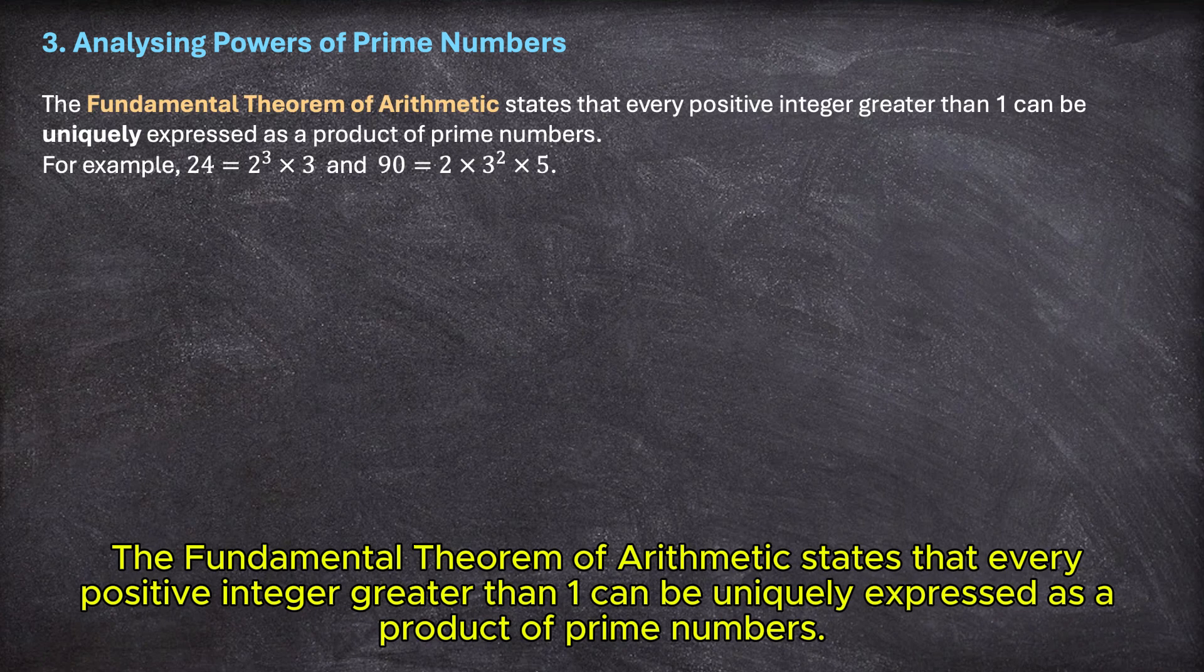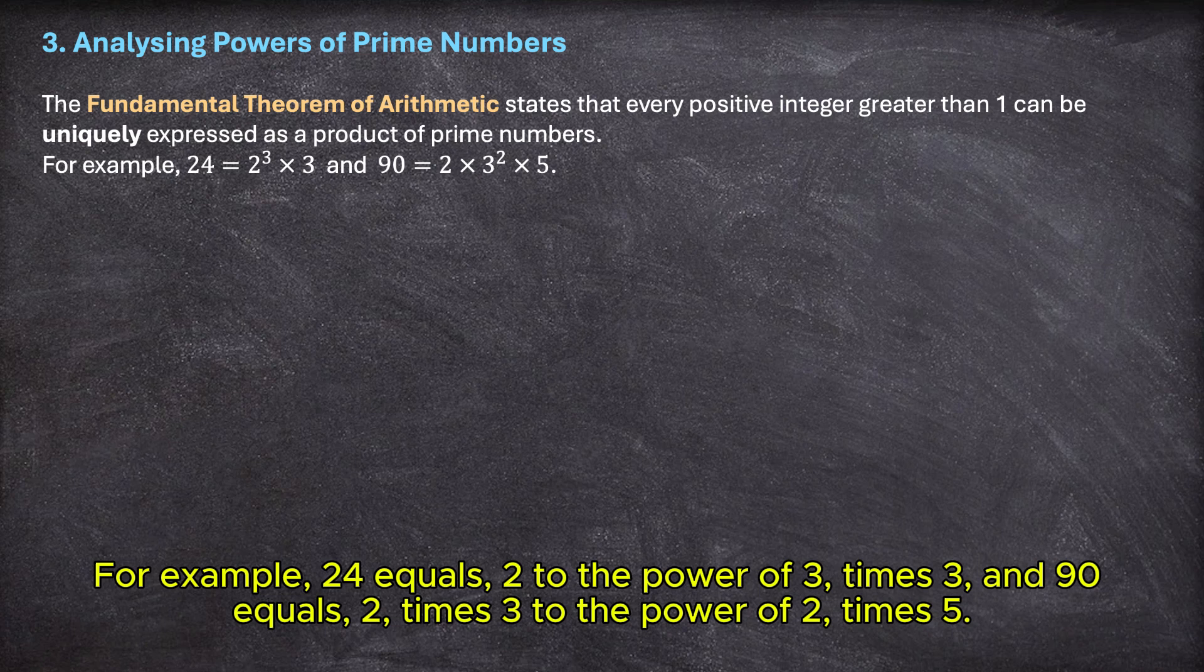The fundamental theorem of arithmetic states that every positive integer greater than 1 can be uniquely expressed as a product of prime numbers. For example, 24 equals 2 to the power of 3 times 3 and 90 equals 2 times 3 to the power of 2 times 5.